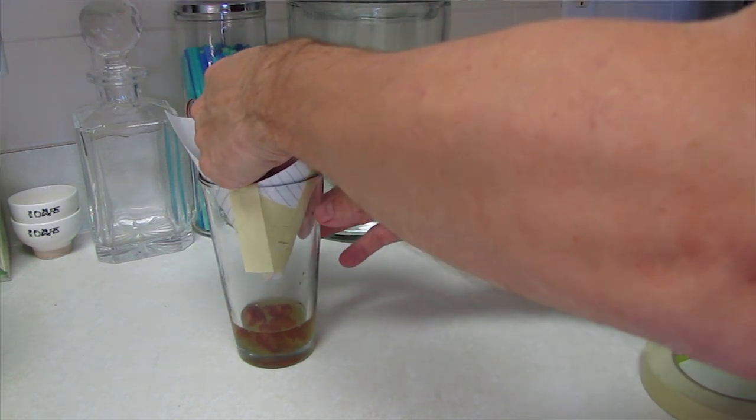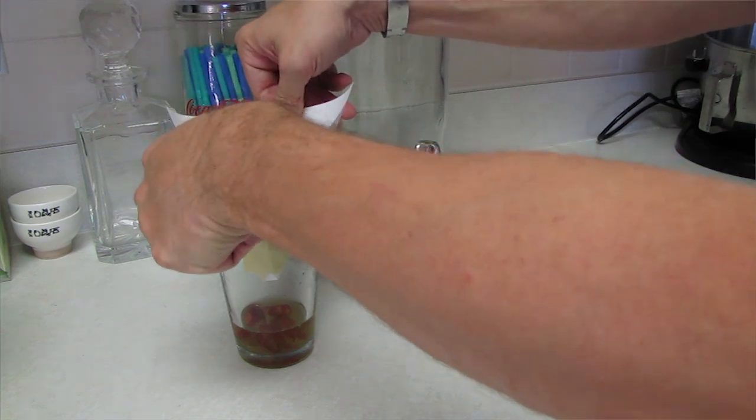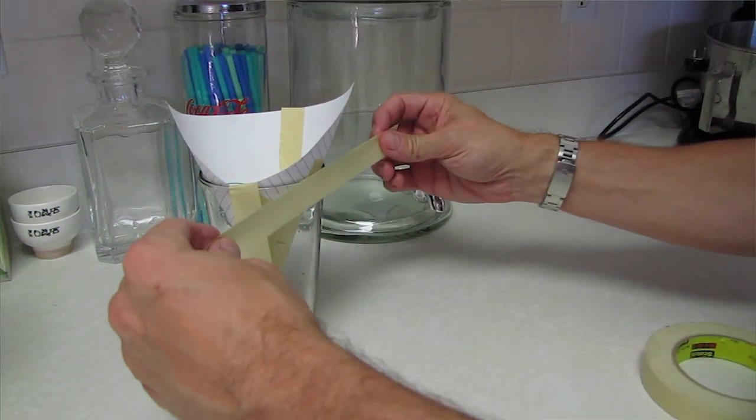Take the cone, place it down in the cup, secure the cone to the cup, and then just wrap tape around the top so the fruit flies can't get out.